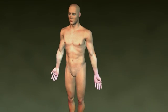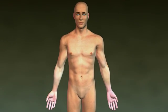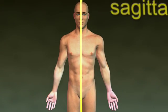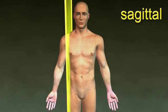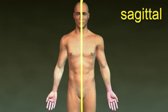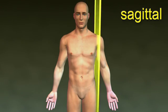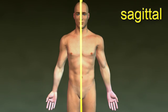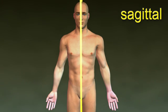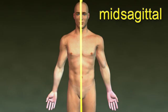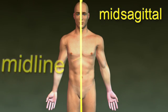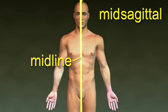The sagittal plane is a vertical plane that divides the body into right and left sections. When this plane divides the body into equal right and left portions, it is called the mid-sagittal plane, or the midline.